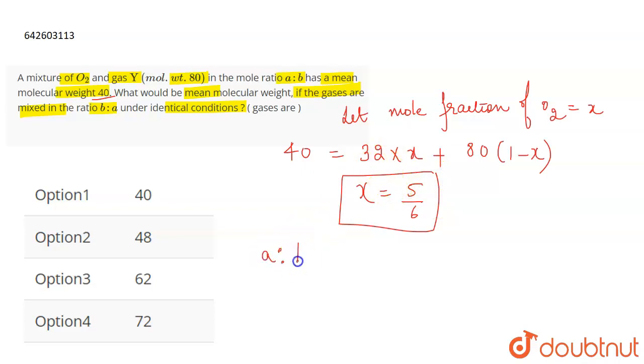So what will be the ratio A is to B? A is to B means A represents oxygen and the mole fraction of oxygen is X. So that is actually 5 by 6 is to 1 minus X which is 1 minus 5 by 6. So the ratio becomes 5 by 6 is to 1 by 6, which actually means that right now A is 5 by 6 and B is 1 by 6.